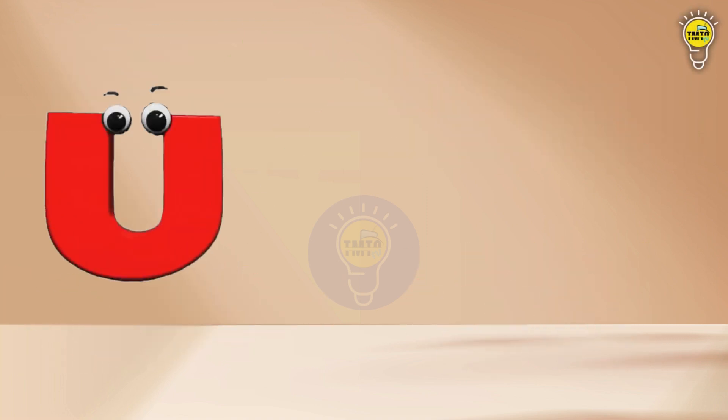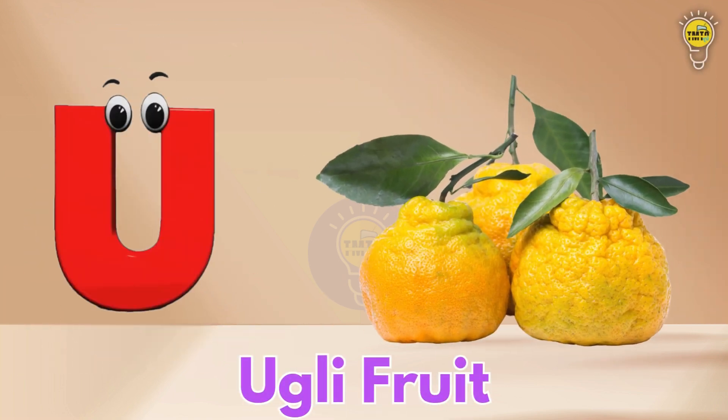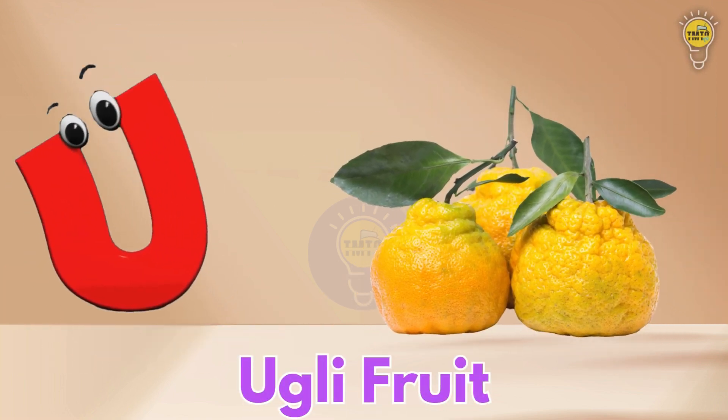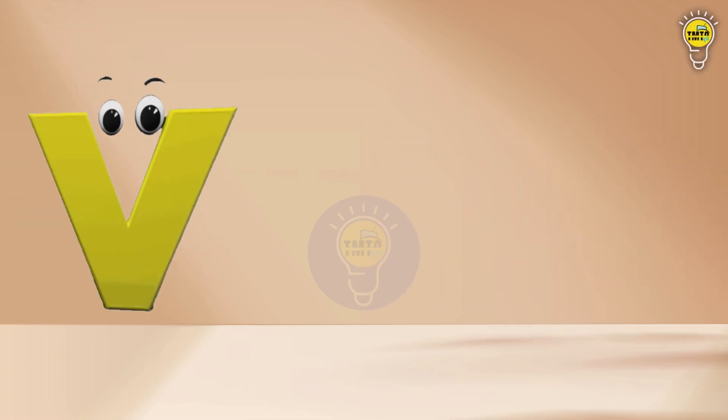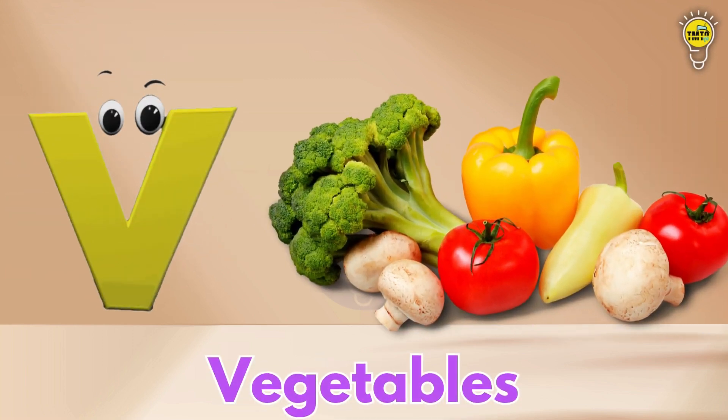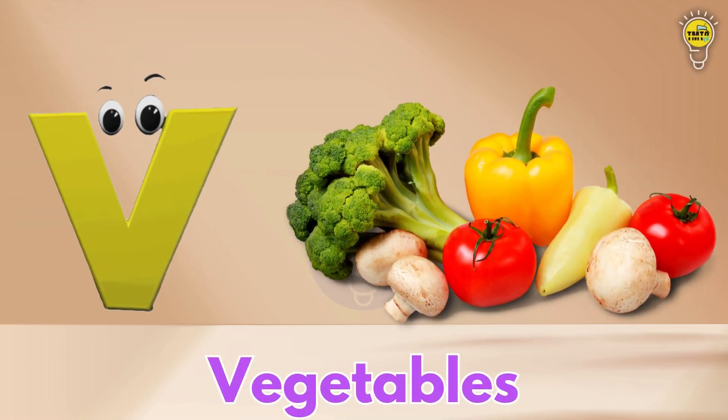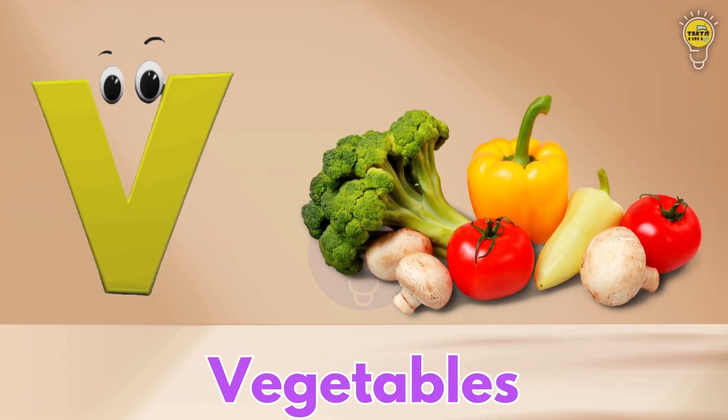U is for Ugly Fruit. Ugly Fruit. V is for Vegetables. Vegetables.